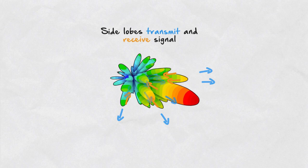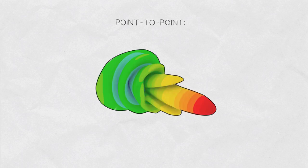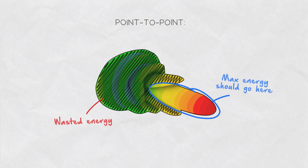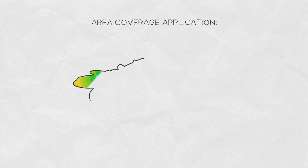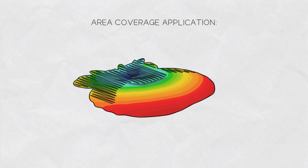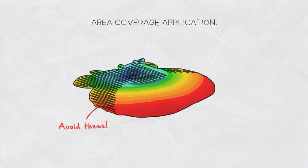The requirements of side lobes vary depending on the application, but in general, side lobes are a huge no-no. For point-to-point applications, we want to deliver as much energy as possible to a single point, and any side lobes means part of it is wasted. For area coverage applications like sector antennas, we want to avoid all side lobes outside the main lobe.